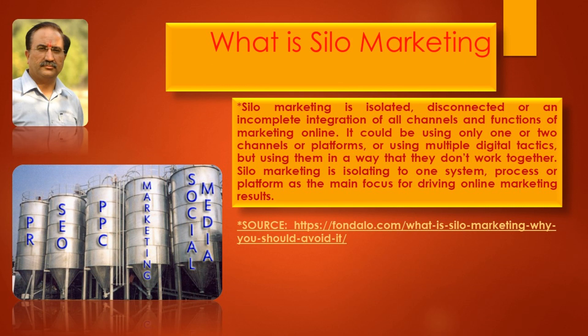The scope and pervasiveness of silo marketing is very wide, but primarily in literature it has been used in the context of online marketing. It could mean using only one or two channels or platforms, or using multiple digital tactics but in a way that they don't work together — they do not integrate well. Silo marketing is isolating to one system, process, or platform as the main focus for driving online marketing results.